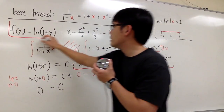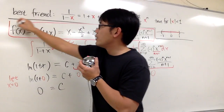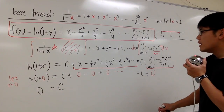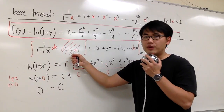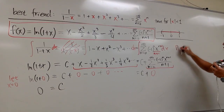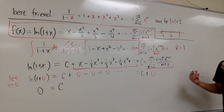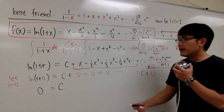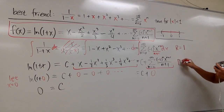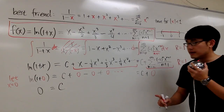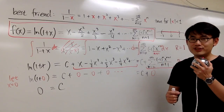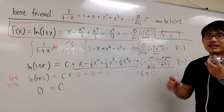This is the power series form for ln(1+x). Regarding the radius of convergence: we used our best friend (the geometric series) by direct substitution, so the radius of convergence is 1. After integrating, the radius of convergence stays the same. However, whenever we integrate or differentiate a power series, we always have to check for convergence at the endpoints.